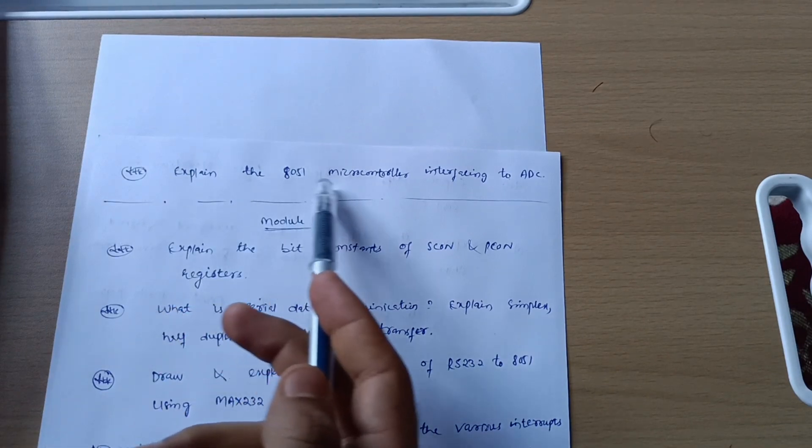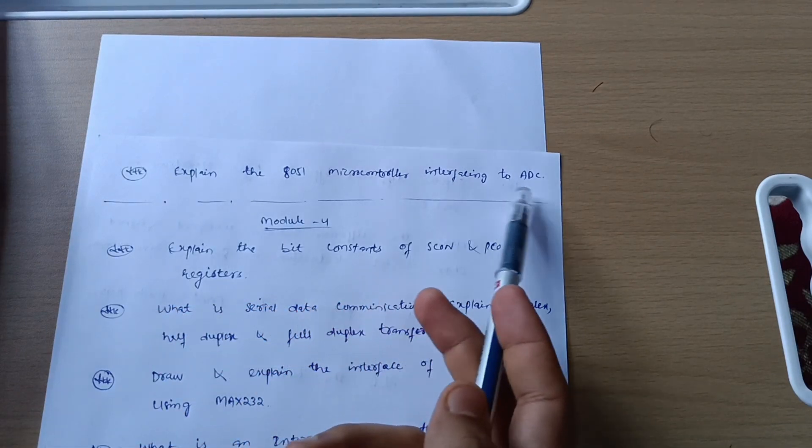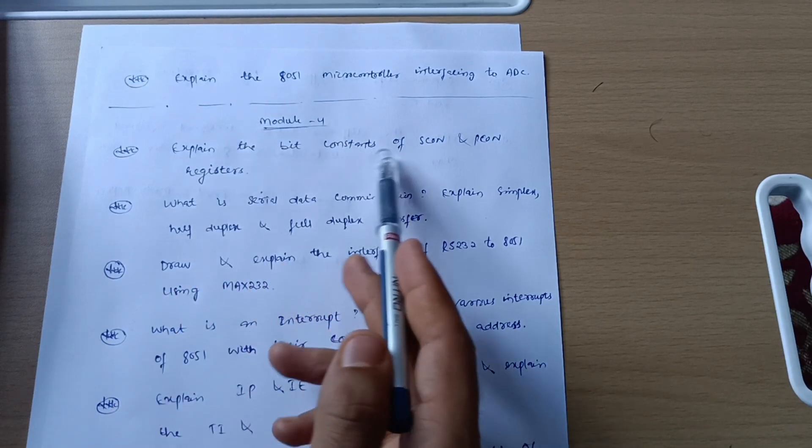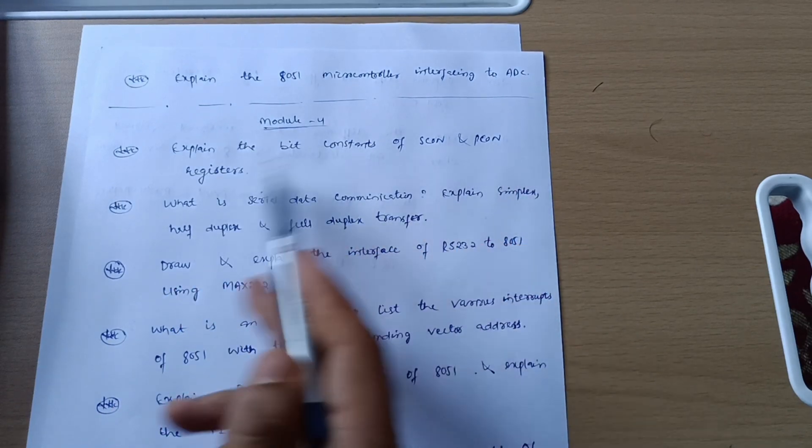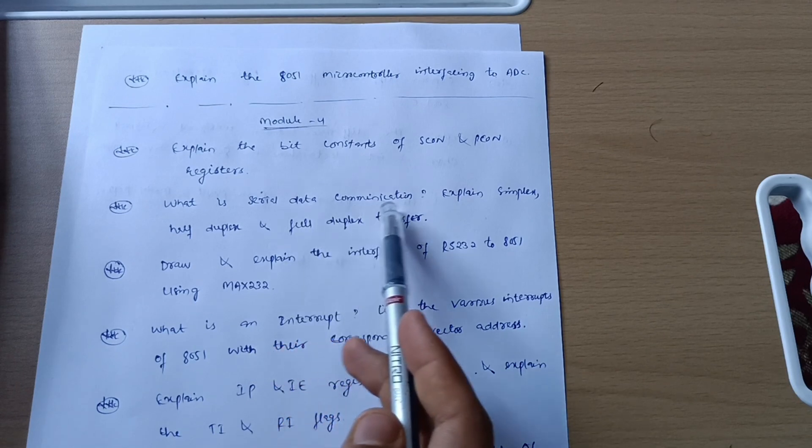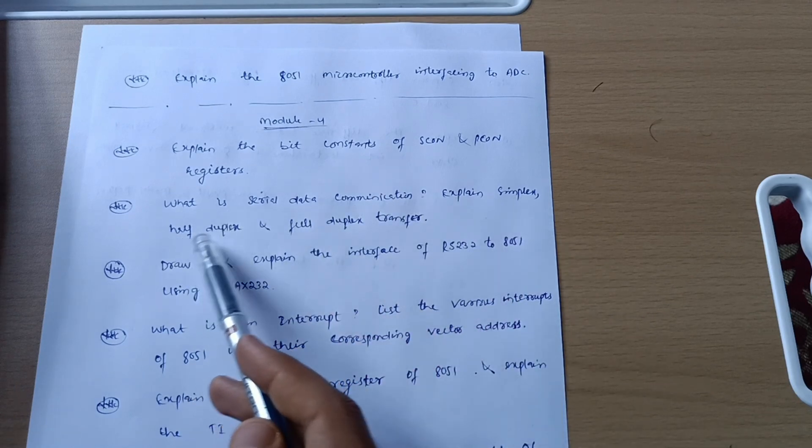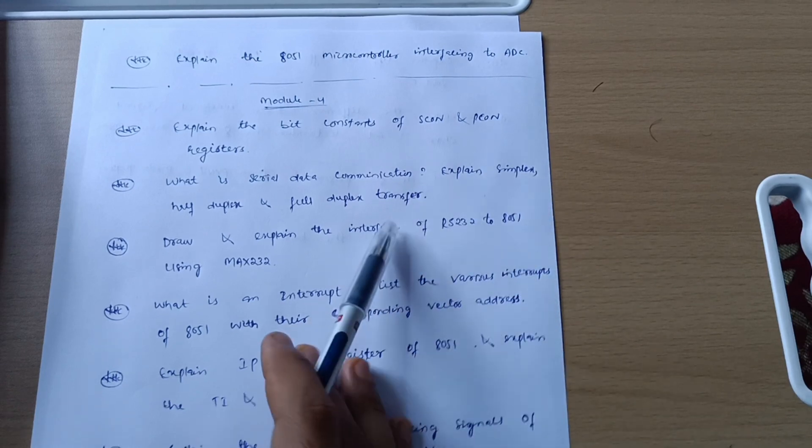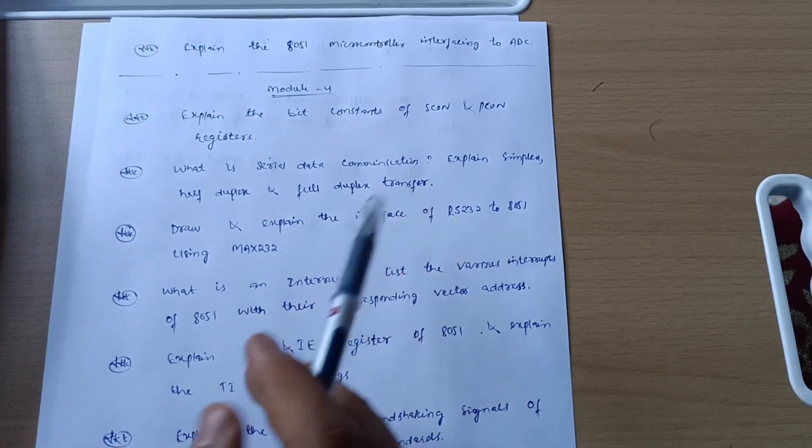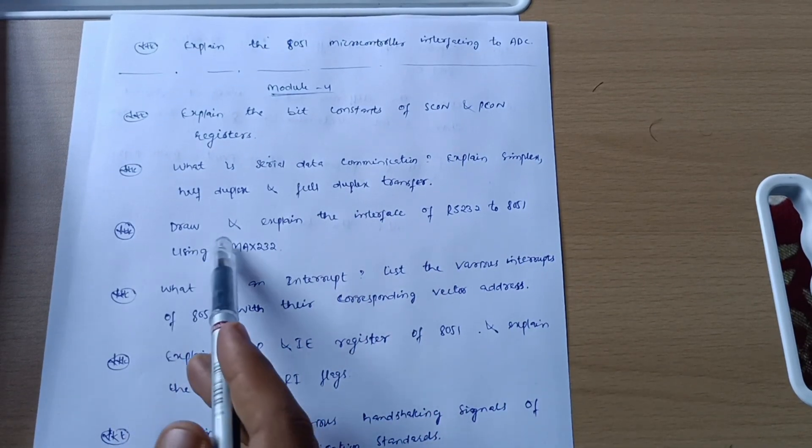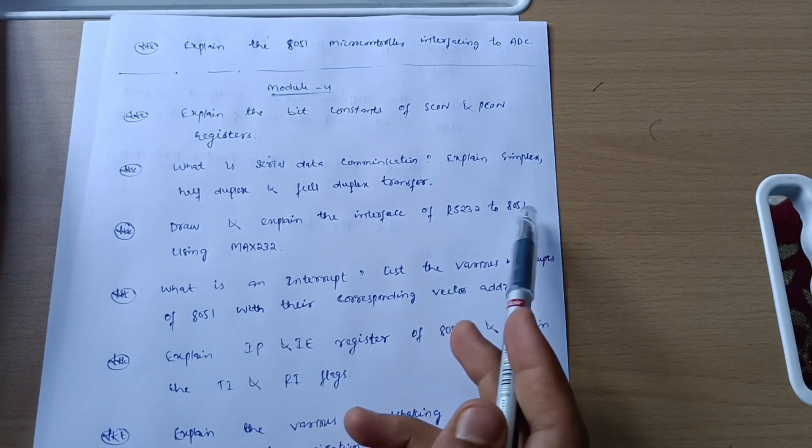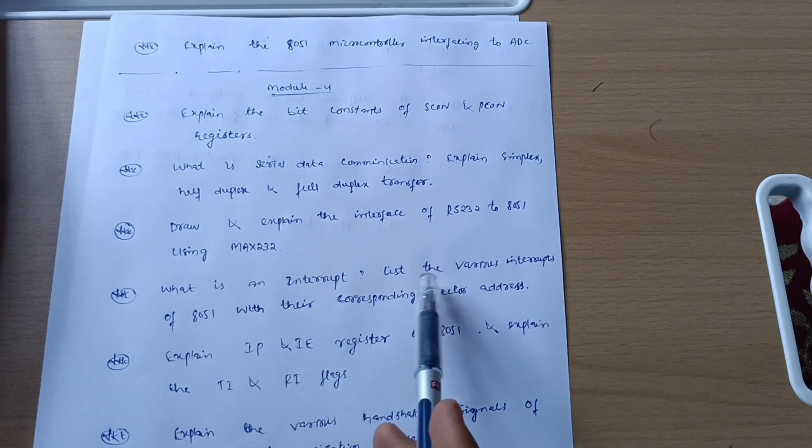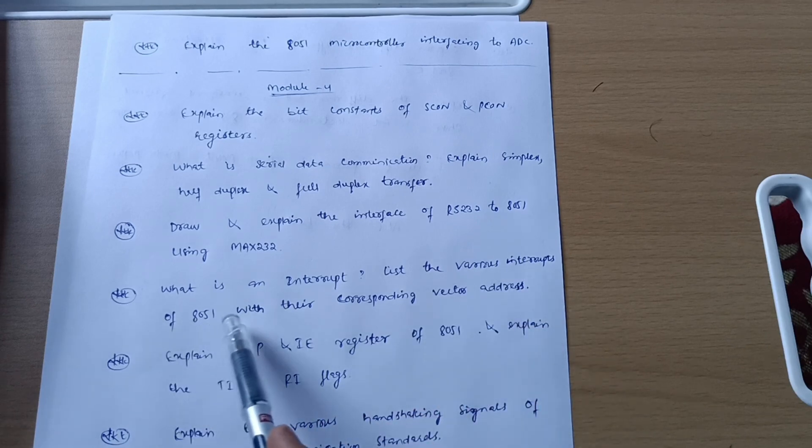Next question from Module 5 which is last one is explain the 8051 microcontroller interfacing to ADC. Now we have Module 4: Explain the bit constants of SCON and PCON registers and what is serial data communication. Explain simplex, half duplex and full duplex transfer. Next is draw and explain the interface of RS232 to 8051 using MAX232.